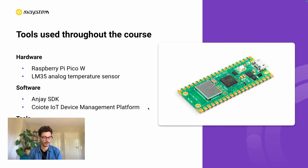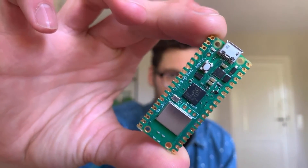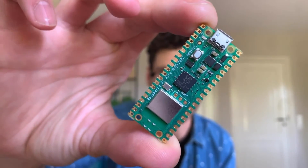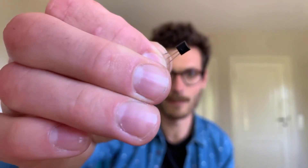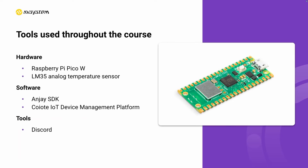Throughout this course we have a few hardware and software tools that we utilize. We mostly make use of the Raspberry Pi Pico, which is the development kit containing a Wi-Fi wireless module. We also have an external analog temperature sensor called the LM35 that we connect to the Raspberry Pi Pico. In addition, we're using the NJ SDK, which is the Lightweight M2M client that we run on the device — this software allows the device to connect to the server.